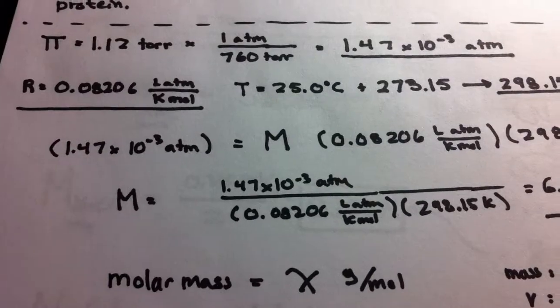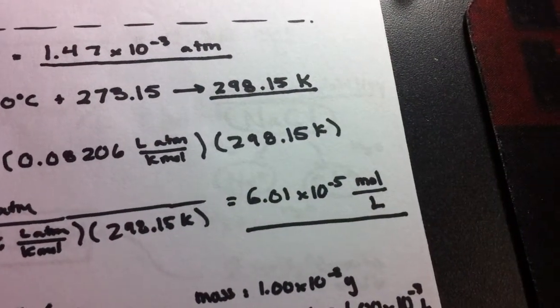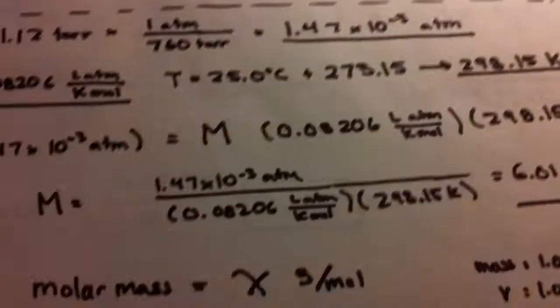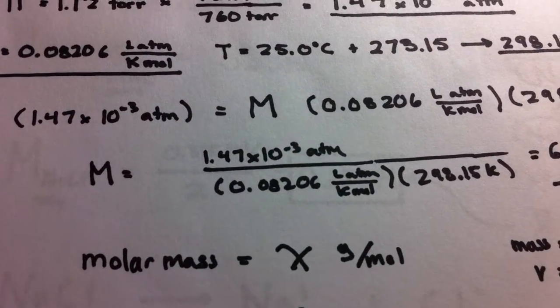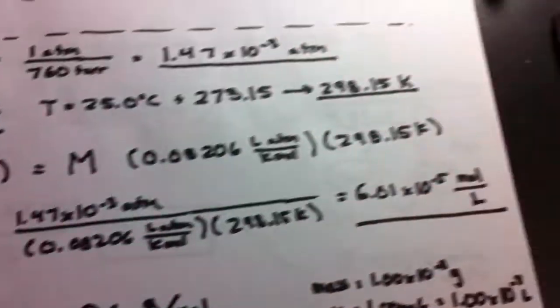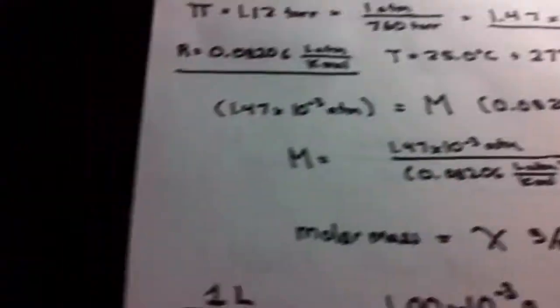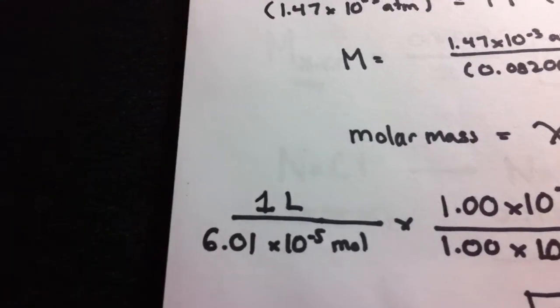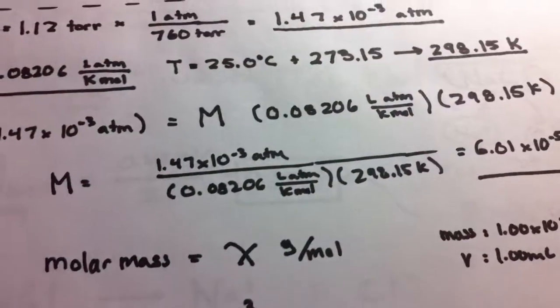We find M to be 6.01 times 10 to the negative fifth moles per liter. In this case, we're trying to find the molar mass, which is given in grams per mole. We have moles per liter, so we can flip that over and have 1 liter over 6.01 times 10 to the negative fifth moles. Now we have to ask, what else are we given?